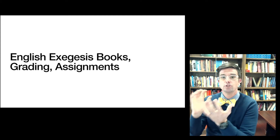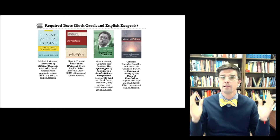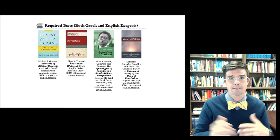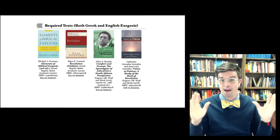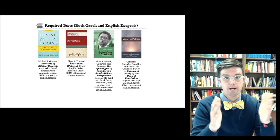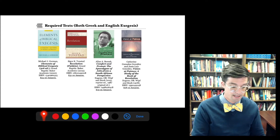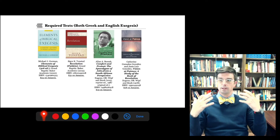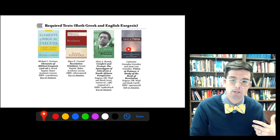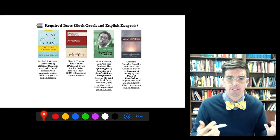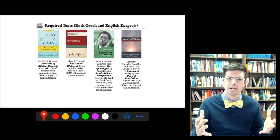Moving from objectives to our books, the grading system, and the assignments. Let's start with books. There are four required texts that everyone in the class will be using — both Greek exegesis and English exegesis students. The first text we'll engage extensively is Michael J. Gorman's "Elements of Biblical Exegesis," which lays out what exegesis is and how to do it. We'll spend the first several weeks with this book before moving into our books on Revelation, and we'll start doing actual exegesis of Revelation in about week five or so. I ask that you get all required texts as soon as possible, but particularly this one, as we'll be reading from it extensively right away.